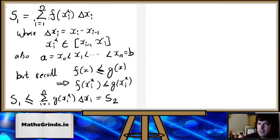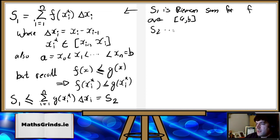I should have written that to start, that S₁ is the Riemann sum for f. I'll write it over here. S₁ is Riemann sum for f over [a,b], and then S₂ is Riemann sum for g over [a,b] as well.